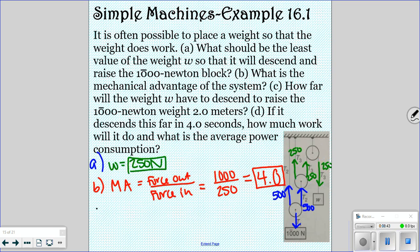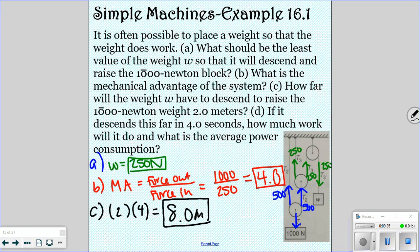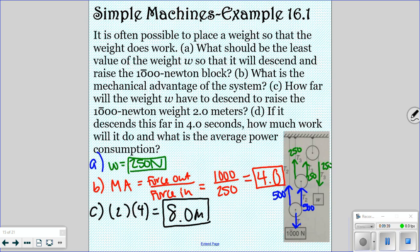For part C, how far will the weight have to descend to raise the 1,000 newton weight 2 meters? So work equals force times distance. The work that we're trying to do is to raise the 1,000 block. The force that we applied was 250. You don't have to do that formula. You can just do, we were making a change by 2 meters. Our mechanical advantage was 4. And so you just multiply them together to get 8 meters. You don't have to go through and use work equals force times distance. We had a 4 mechanical advantage. So multiply your distance by that mechanical advantage.